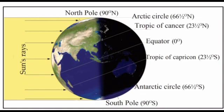The angle of incidence of the sun's rays becomes more inclined on approaching the poles. Therefore, the temperature will be low at places where the sun's rays fall obliquely.